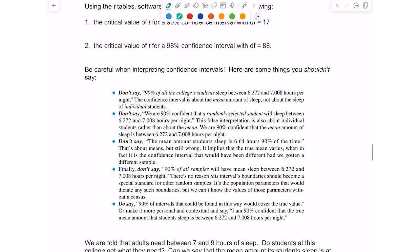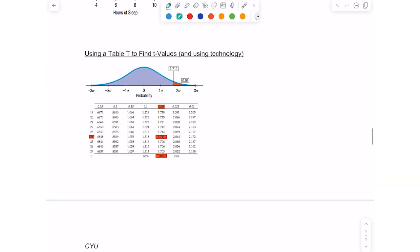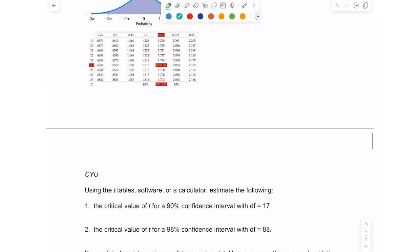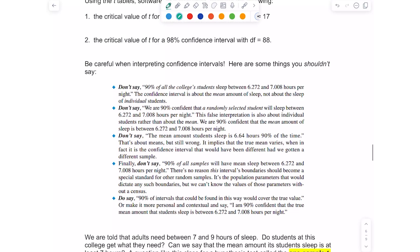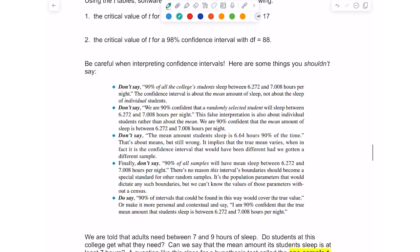Here's a list of things that you shouldn't say. For instance, in the problem that you are going to complete, you can either pause the video now and complete it or you can try afterwards. Don't say 90% of all the college's students sleep between 6.272 and 7.008 hours per night. The confidence interval is about the mean amount of sleep.